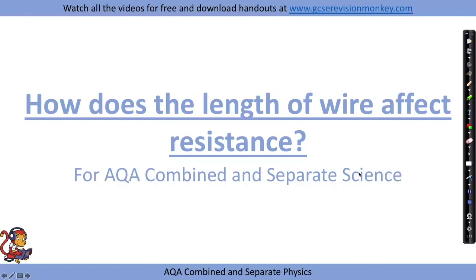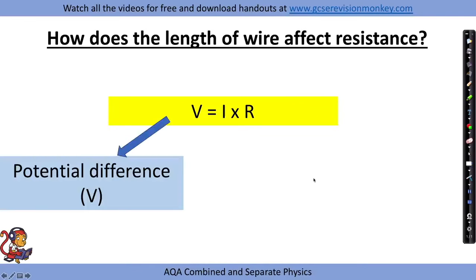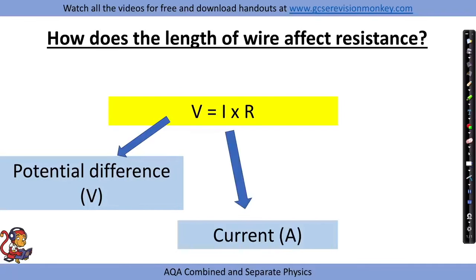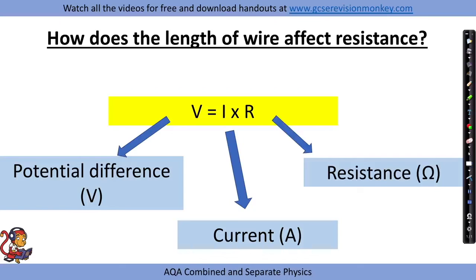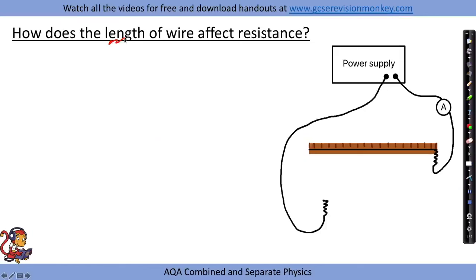For the 'how does the length of wire affect resistance' required practical, we need to recall V = IR, where V is potential difference in volts, I is current in amps, and R is resistance in ohms. We'll use the rearranged version R = V divided by I. The independent variable is the length of wire, and the dependent variable is resistance.